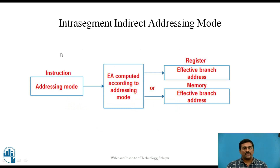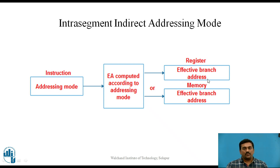This is the figure for intrasegment indirect addressing mode. The instruction provides the addressing mode, which can be any of the data-related addressing modes except immediate. The effective address (EA) is computed according to the specified addressing mode, and it can be the contents of a register or the contents of a memory location. That is, the effective branch address is either the content of a register or the content of a memory location.